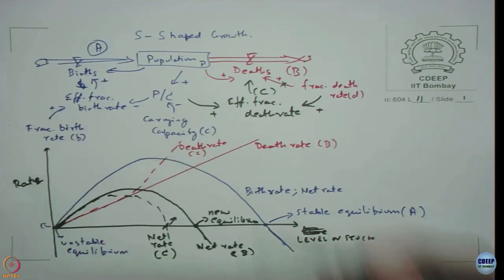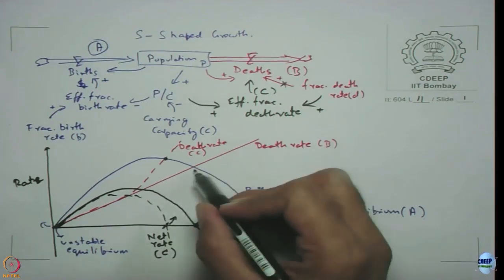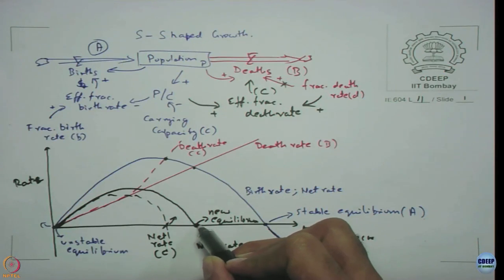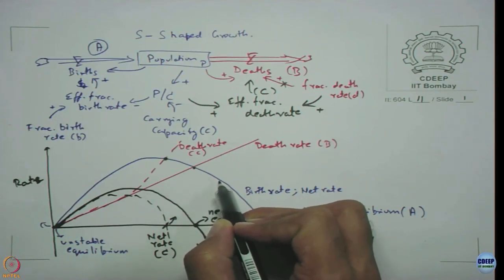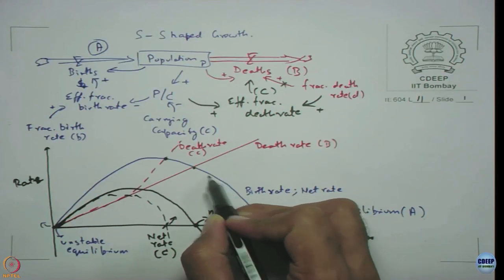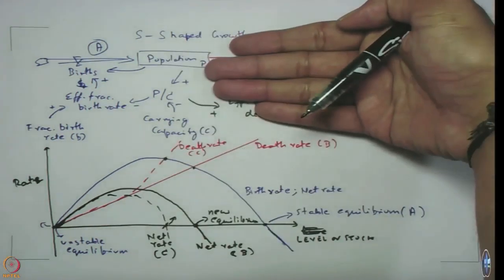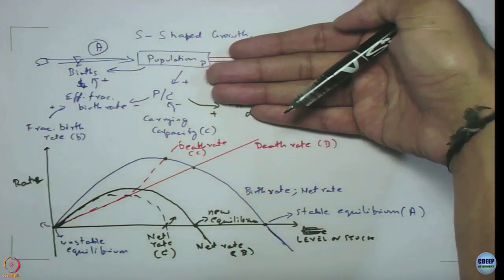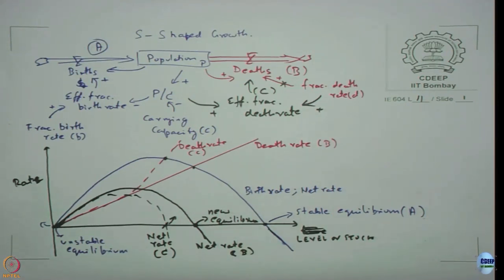The equilibrium point is the point of intersection between birth rate and death rate. If you have only birth rate and population with no death constraint, there is nothing to stop the system going all the way down to zero, which becomes another equilibrium point. That summarizes what we did last class.